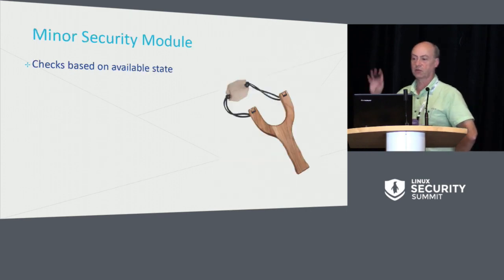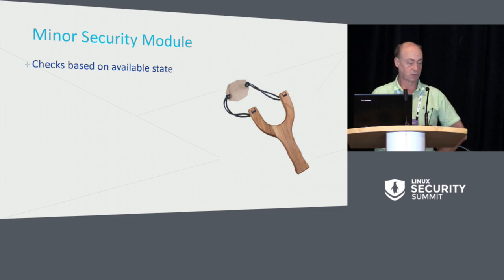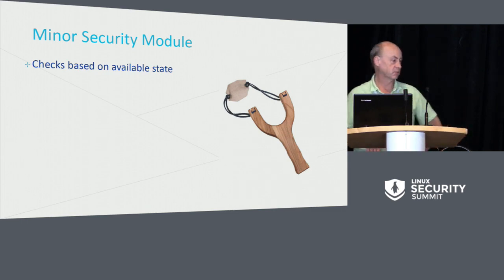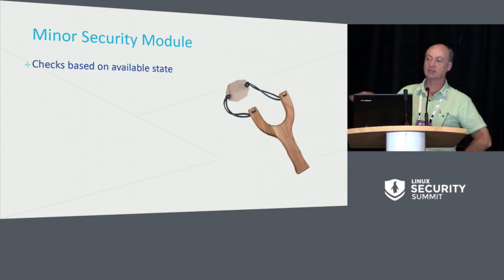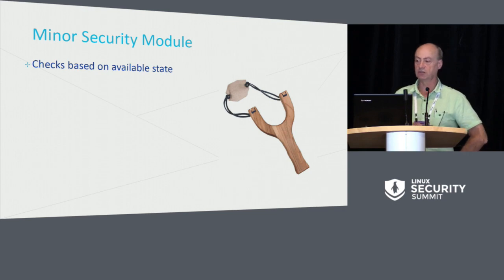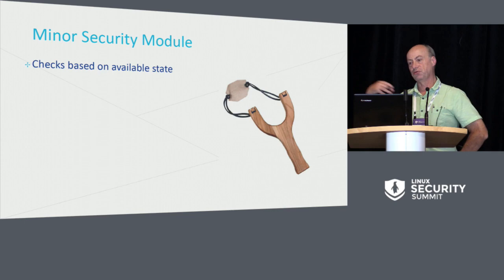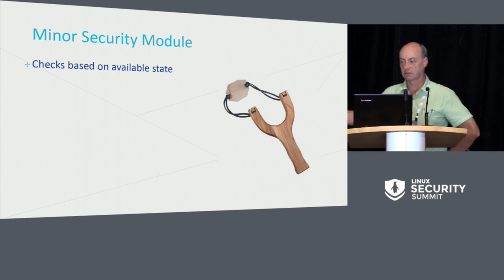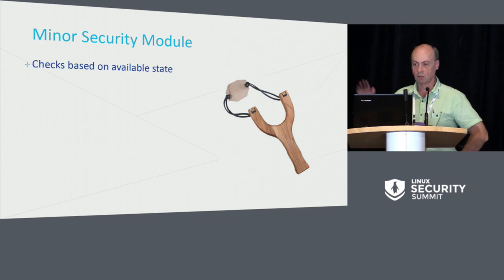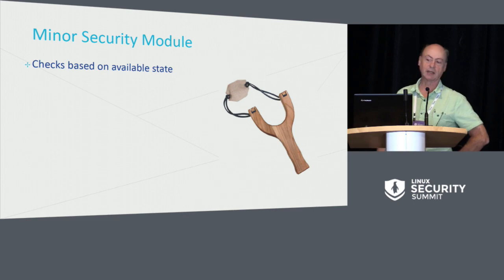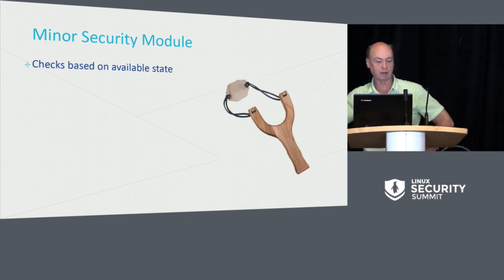We have two kinds of security modules today. One is a minor module. Minor modules have the aspect that they don't maintain any state. They make their decisions based on the information that's readily available at that time. They don't keep track of anything. They just make a minor change — for example, what's in a path name, whether an inode is a symlink or a directory, that kind of information.